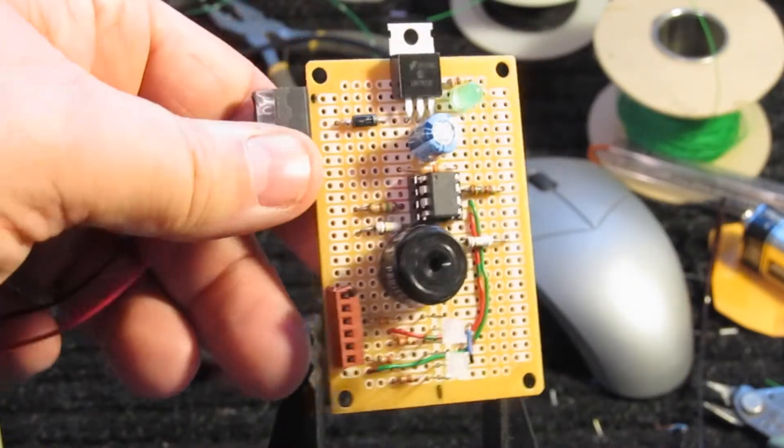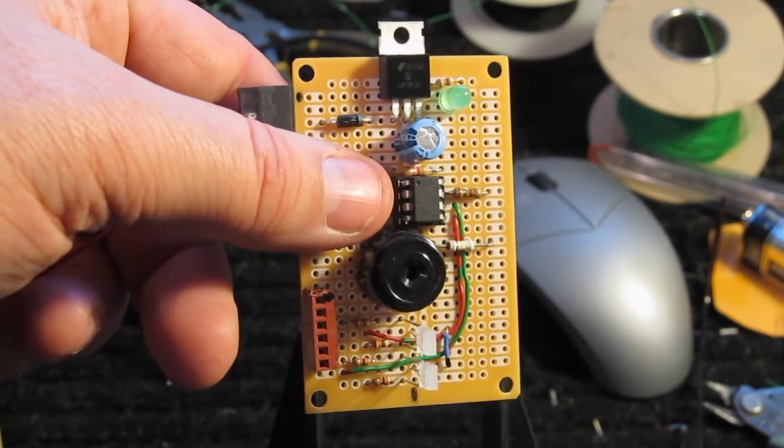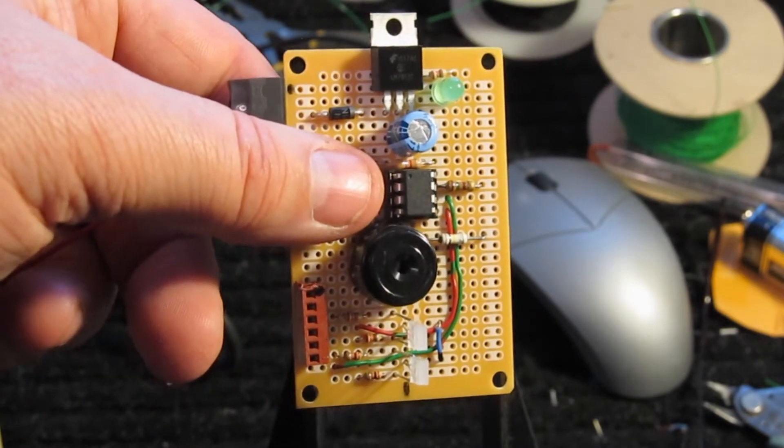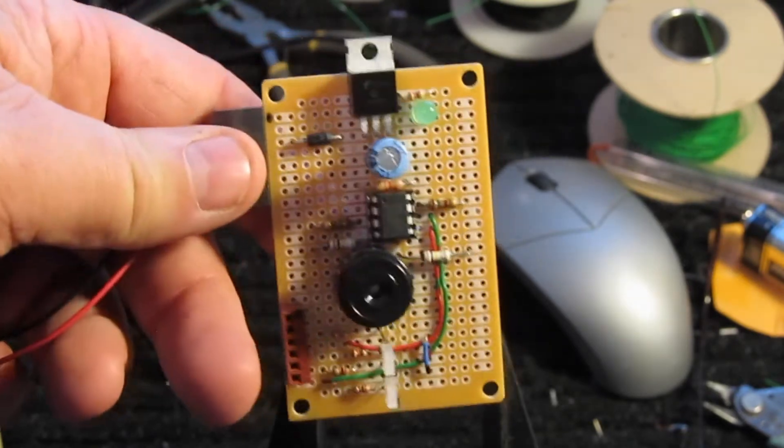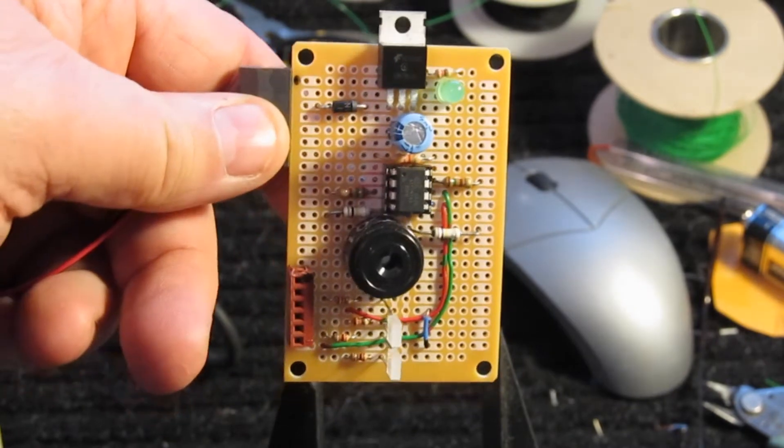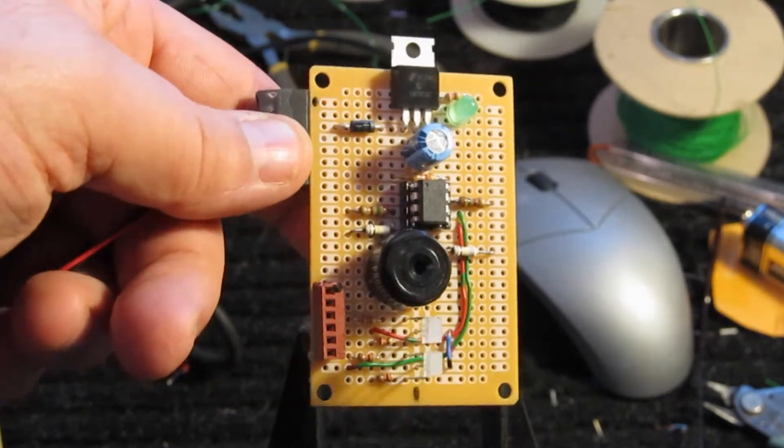This is plan B. Now what this is right here is a Tiny 13. It's an AVR. The Arduinos use an AVR. They use a much larger cousin. This is a Tiny 13. It's a little 8-pin chip, which means it's got power, ground, and reset. And it gives me five I/O pins, which is plenty.